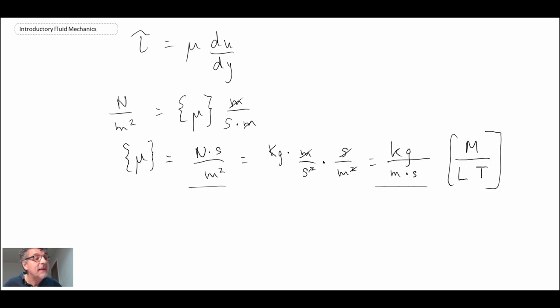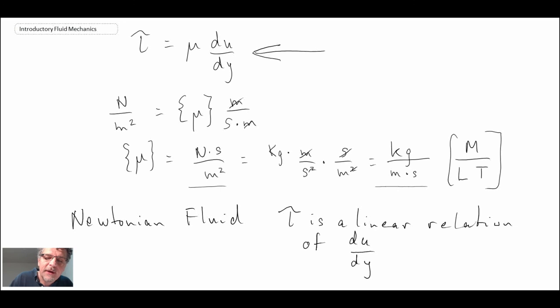Now, one last thing that I should say, and I did mention this at the beginning, this is assuming that we're dealing with a Newtonian fluid. And the characteristic of a Newtonian fluid is that tau is a linear relation of du by dy. Now, there are some fluids that are non-Newtonian. And for those fluids, it is not a linear relationship. So you would have a non-linear relationship here. Those are fairly complex fluids to analyze, and we will not be analyzing them in this course. But I will give you some examples of non-Newtonian fluids in the next segment.